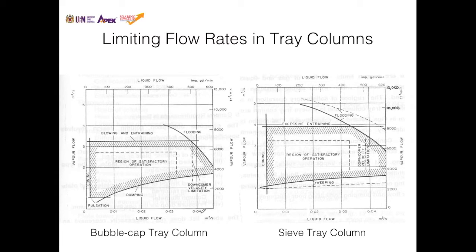For example, if the liquid flow is high and the vapor flow is also high and it moves out of the satisfactory operation region, then flooding would occur. But if liquid flow is low while vapor flow is low too, then the coning phenomena would occur, as well as other undesirable phenomena on the outer regions of the satisfactory region.